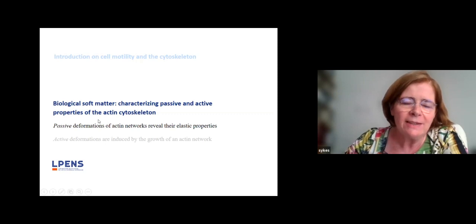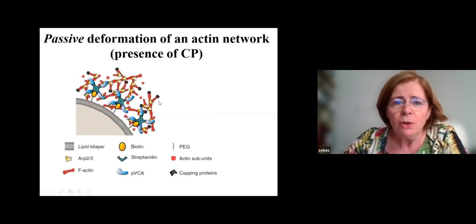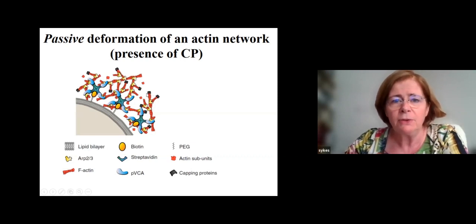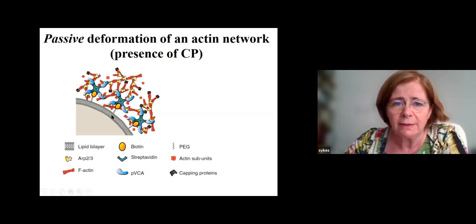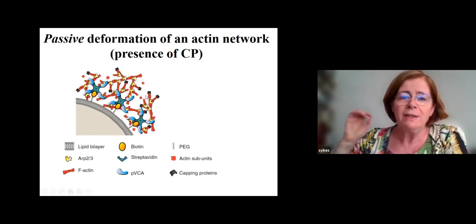I'd like to insist on the difference between passive and active deformations of the actin cytoskeleton — we'll focus on the passive part. We take our experimental system with a membrane, the activator of actin polymerization, and capping protein. We stick our activator to biotin links that are linked to the membrane. We first grow the actin network, then stop the reaction by diluting the sample so there is no ATP anymore and no active monomer.